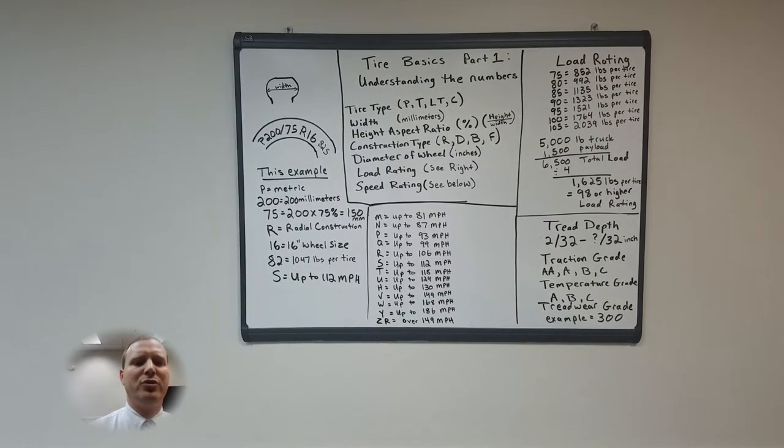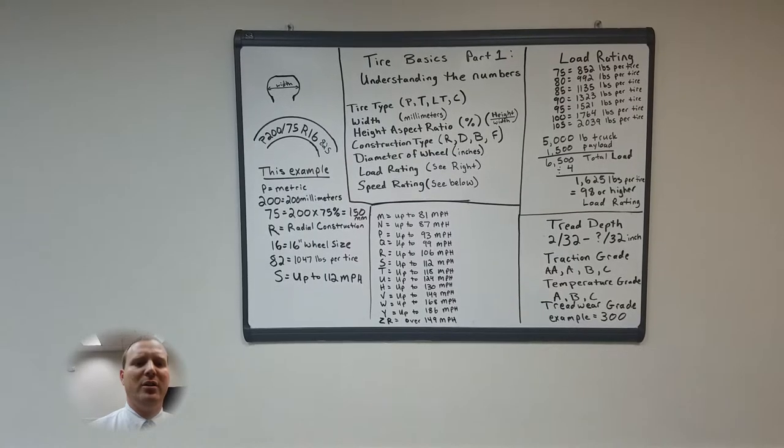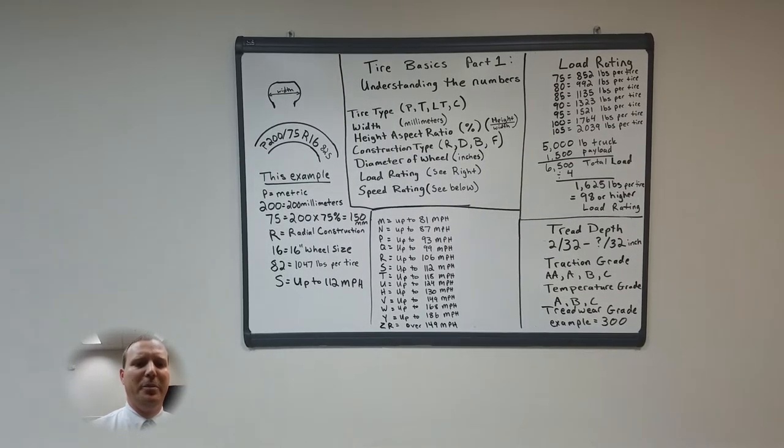Then you have a temperature grade which is A, B or C which is its ability to resist temperatures from higher speeds.